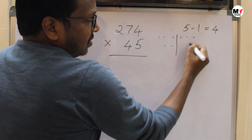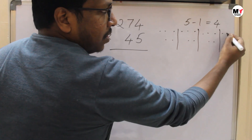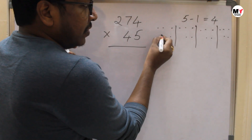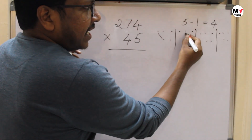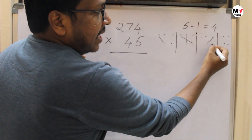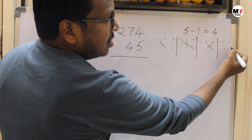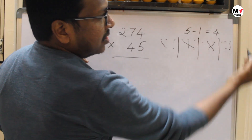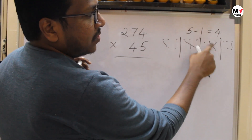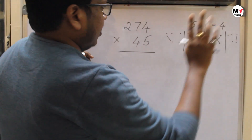First step, second step, third step, and fourth step. The first step is always first with first. The second step: first with second and second with first. The third step: first with third and second with second. The fourth step: second with last, last with last. So just four steps we got here.